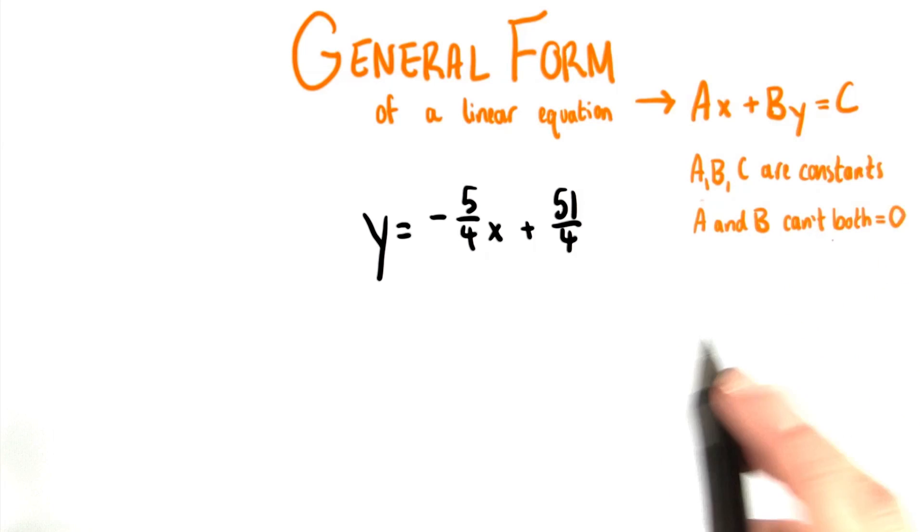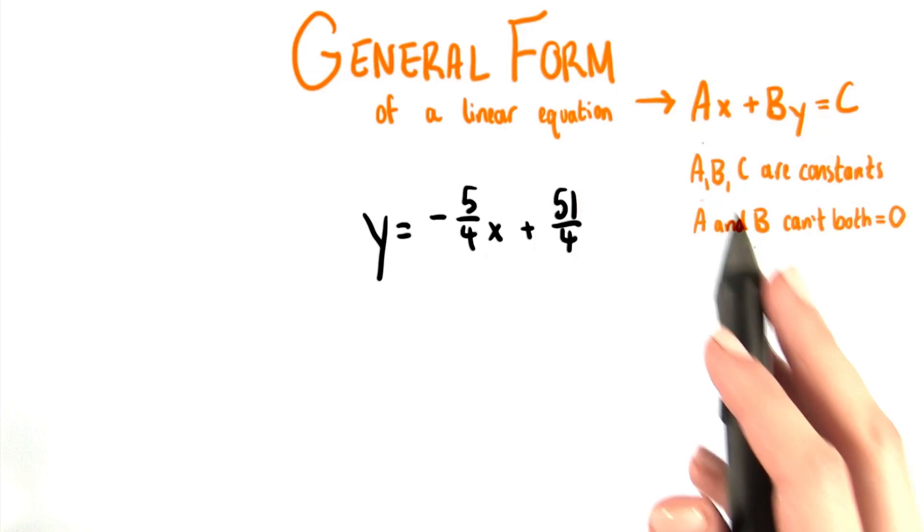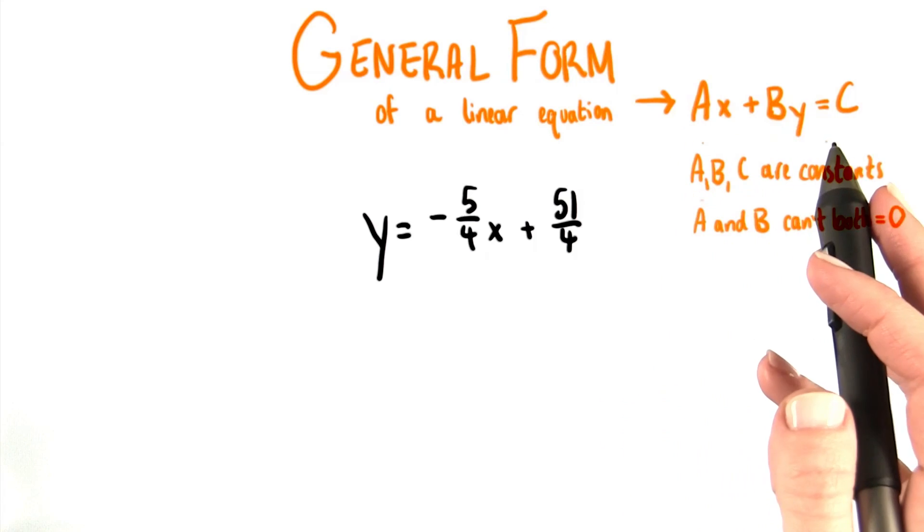In addition to this, we have one more little requirement. One thing that's not allowed is for A and B to both be equal to 0.